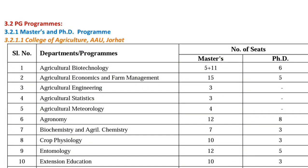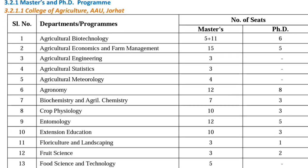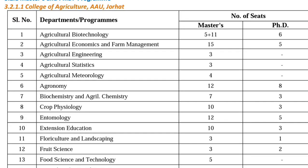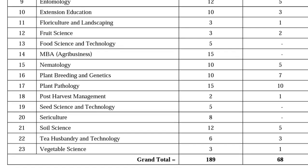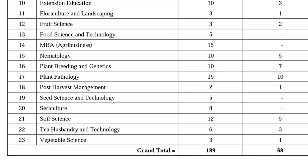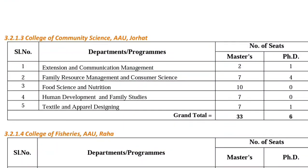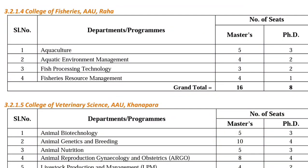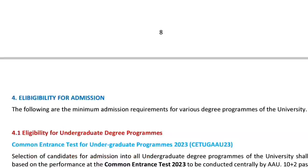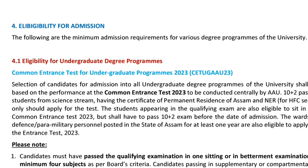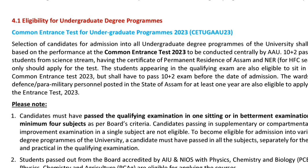There is a website to check admissions. Masters and PhD programs are available for Agriculture and Biotechnology students. For the undergraduate admission test, the code is CETUGA. Eligibility requires 10+2 with a science background, including Physics, Chemistry, and Biology or Agriculture.